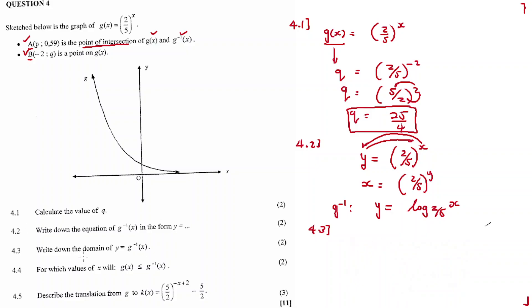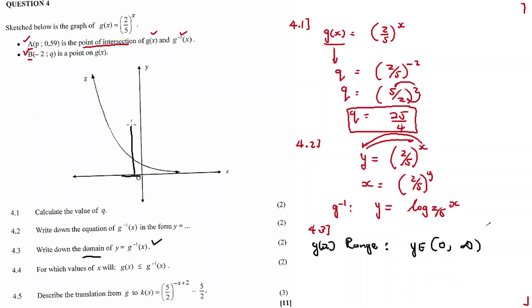So to answer 4.3 — to get the domain for the inverse function, we have to get the range of the original function G. The range of G of X is Y element of 0 to infinity — excluding zero because of the asymptote. So for G inverse of X, the domain is X element of 0 to infinity. You just remove Y and put in X. That's it.